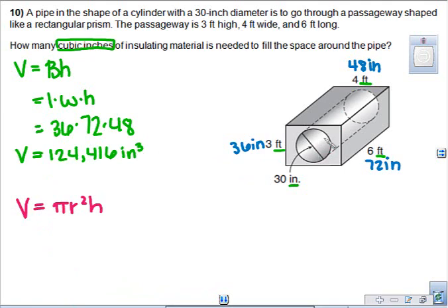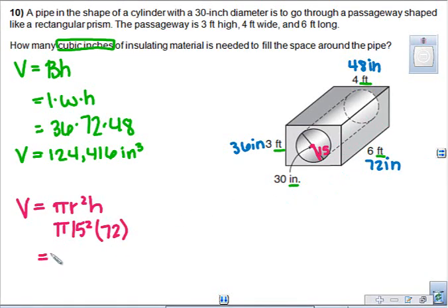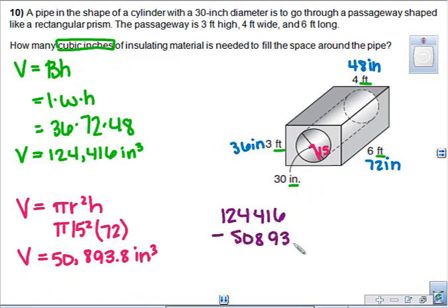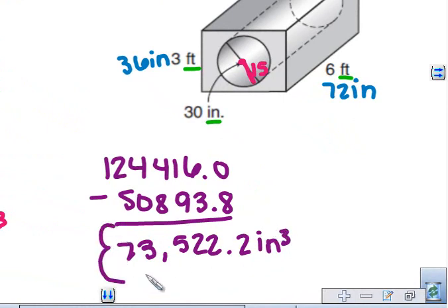Now let's look at the cylinder. So if the diameter is 30, that means the radius is 15. So we have π(15)² times height. Now the height is the distance from one base to the other, so this length here, which we said is 72 inches. Make sure you're plugging in 72, not 6, because we are using inches. So that gives you approximately 50,893.8 cubic inches. Now they want to know the insulation material, so that's in between, so that's the difference. So we subtract. So 124,416 minus 50,893.8, and that leaves you with 73,522.2 cubic inches of insulation material needed.